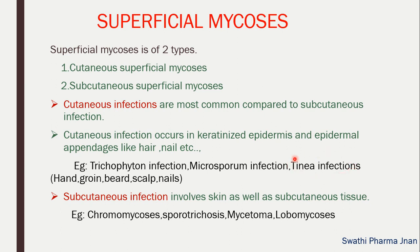Tinea infections such as tinea cruris and tinea barbae cause mycosis on the hand, groin, beard, scalp, and nails. Subcutaneous infection involves the skin as well as the subcutaneous tissue, which is the layer beneath the cutaneous epidermal layer. Examples of subcutaneous infections are chromomycosis, sporotrichosis, mycetoma, and lobomycosis.